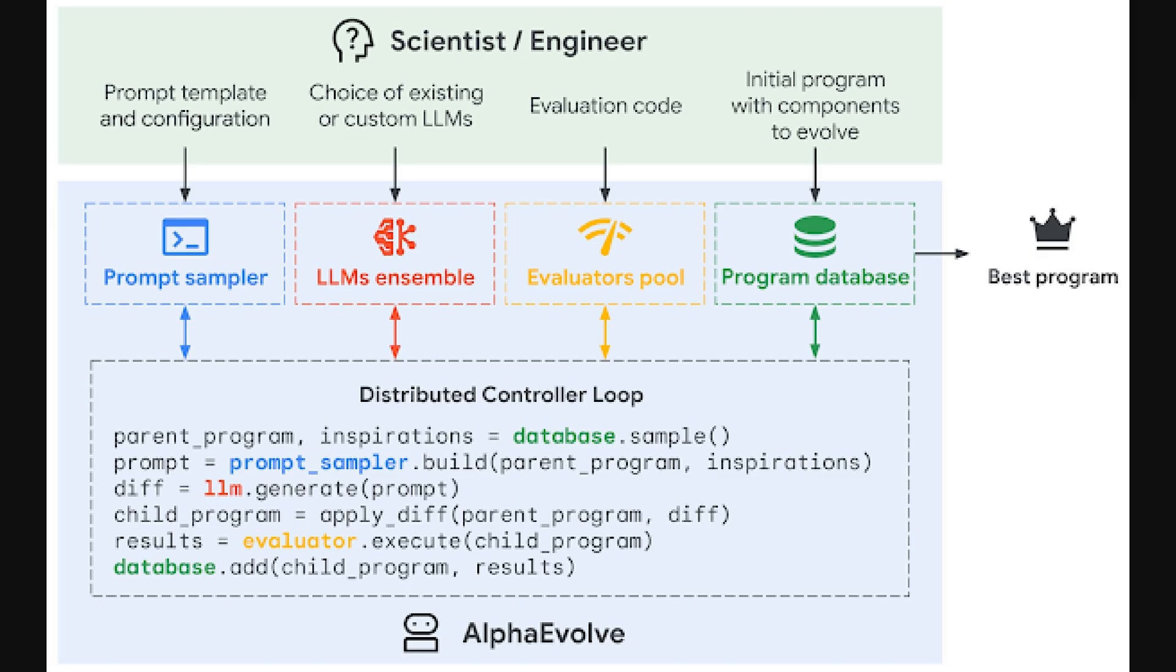Then, AlphaEvolve's automated system takes over. It has a prompt sampler, an LLM ensemble, that's a group of different LLMs working together, an evaluator pool to test the generated programs, and a program database. The core is the distributed controller loop, an iterative evolutionary process that refines programs until the best one emerges.